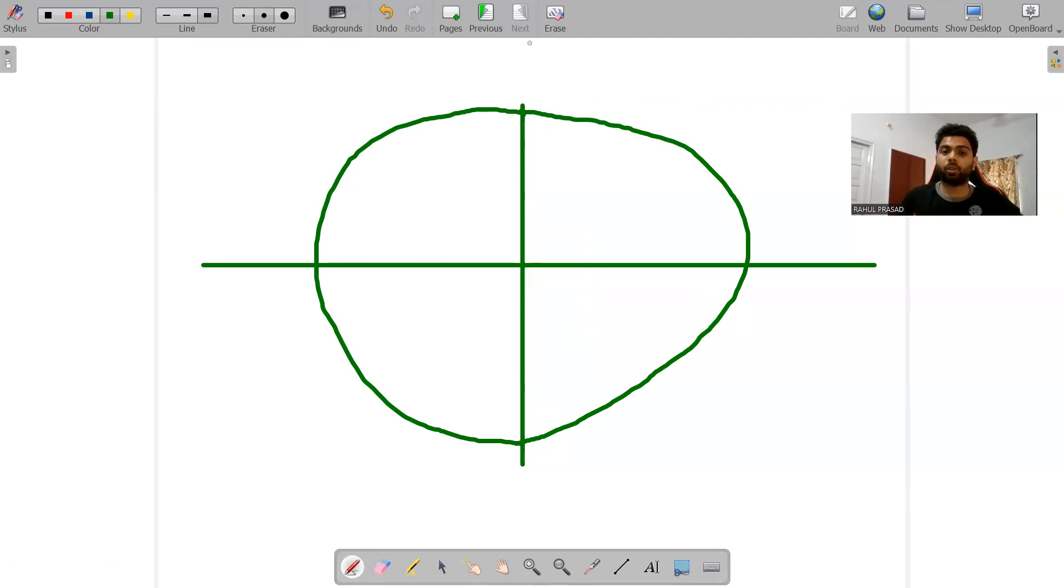So we will name them as quadrants, exactly in the same manner as we do in coordinate geometry. We will name them as quadrants. So this will be my first quadrant. This will be my second quadrant. This will be my third, and this will be my fourth quadrant.